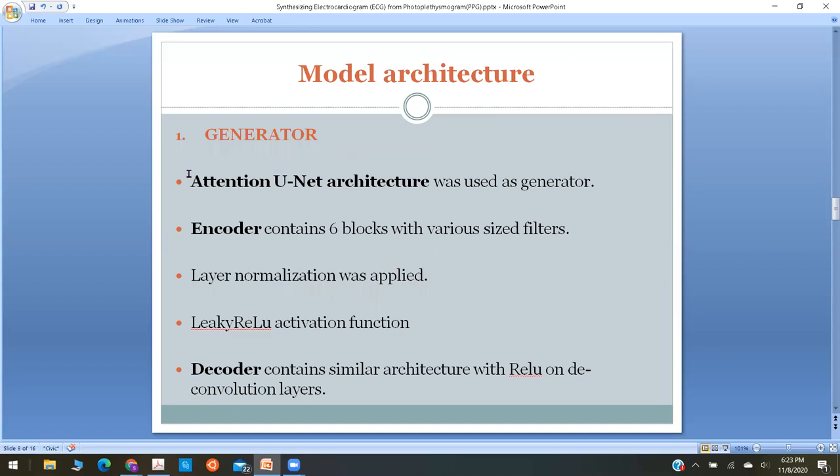Once the data was prepared, it was input to the model. For the model, there was a generator and a discriminator. As we know, in a typical generator setup, we have an encoder and a decoder. The encoder side had six blocks or six layers, and each layer had a certain filter. Normalization was applied at the end of each layer, and leaky ReLU was used as the activation function. A similar architecture was used at the decoder end. The only difference is that deconvolution happens on the decoder side, so ReLU was used instead of leaky ReLU.